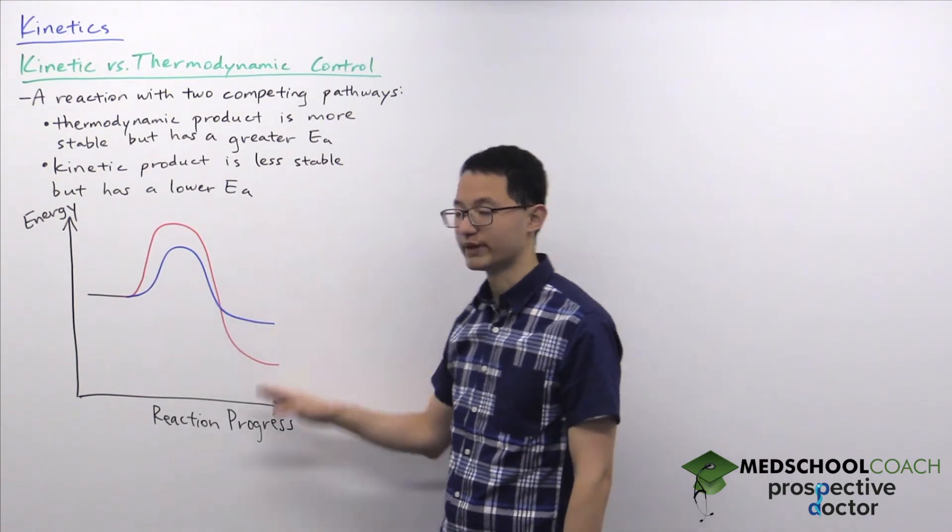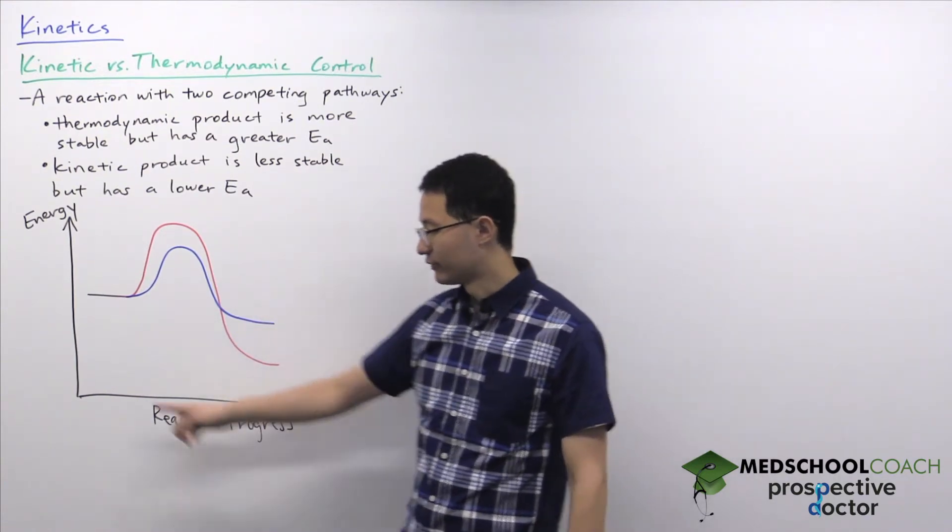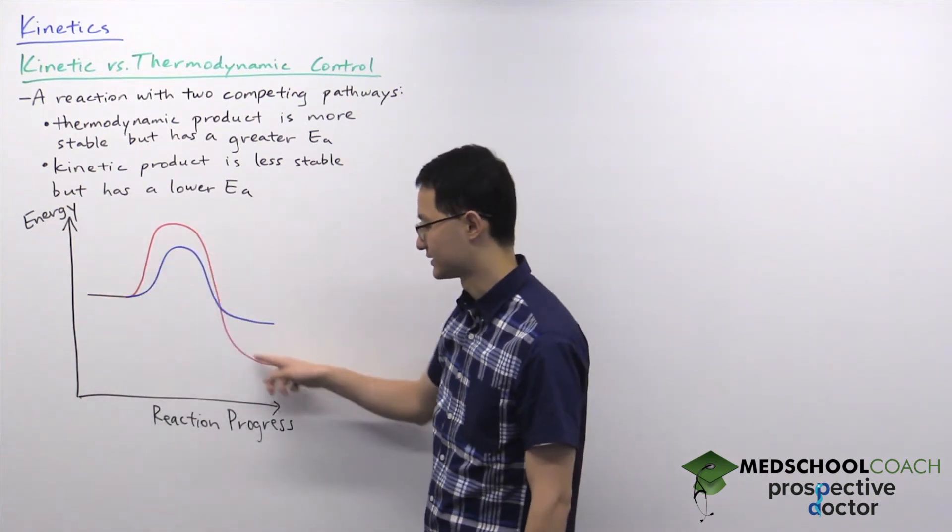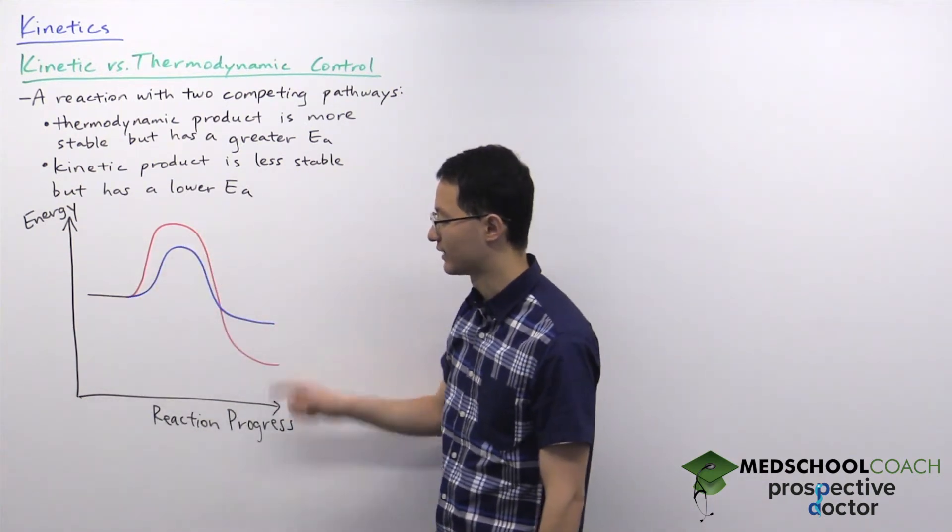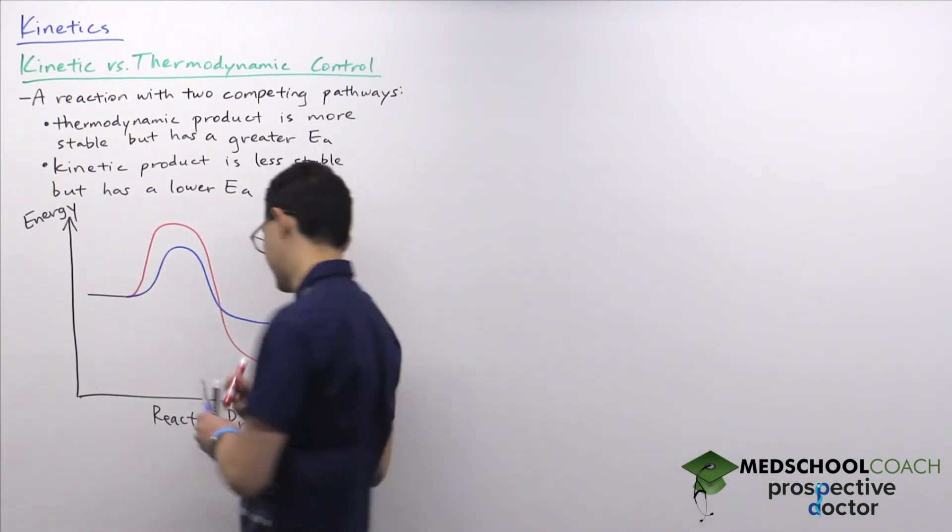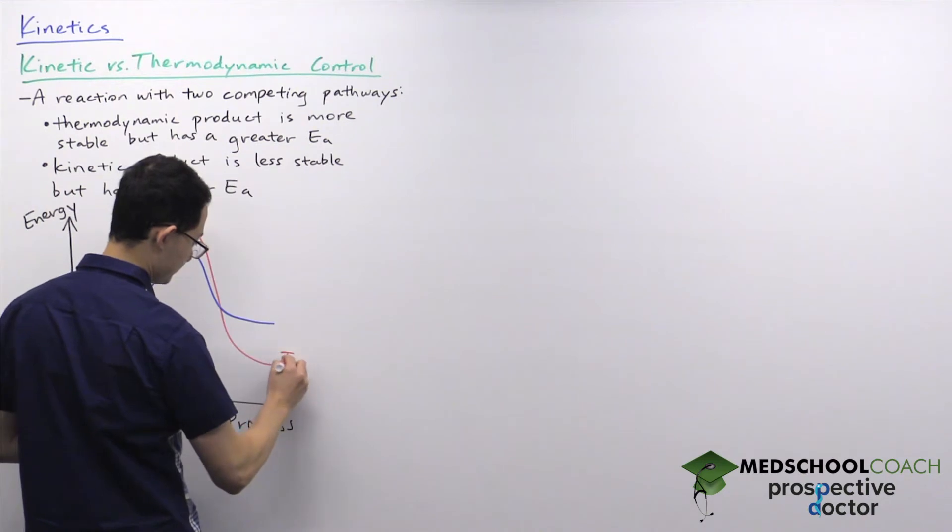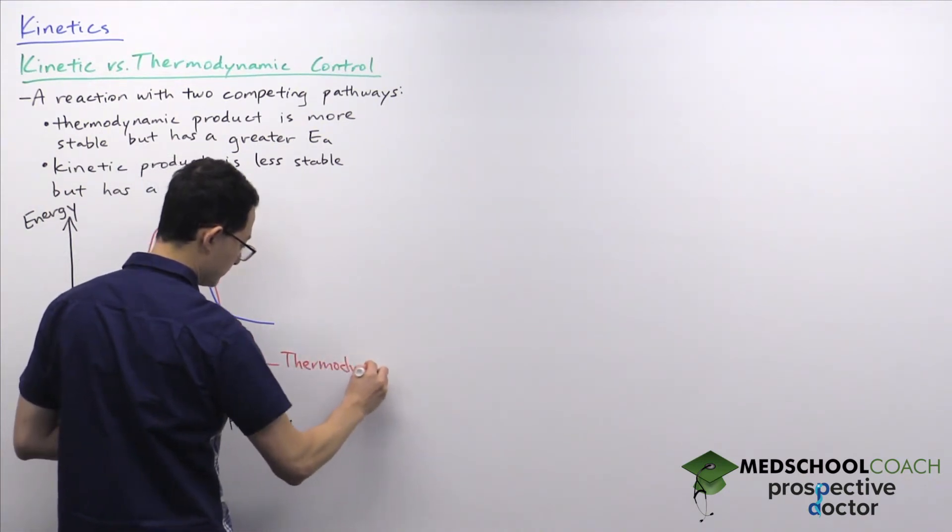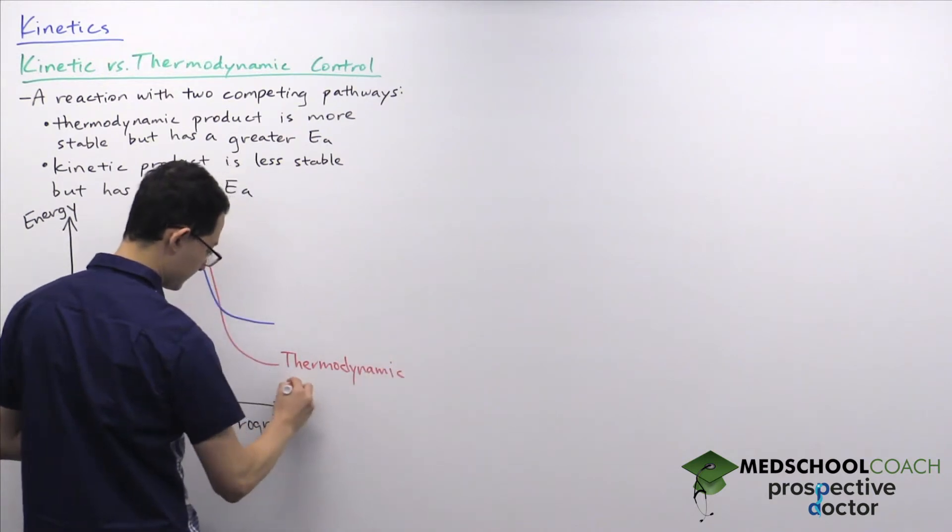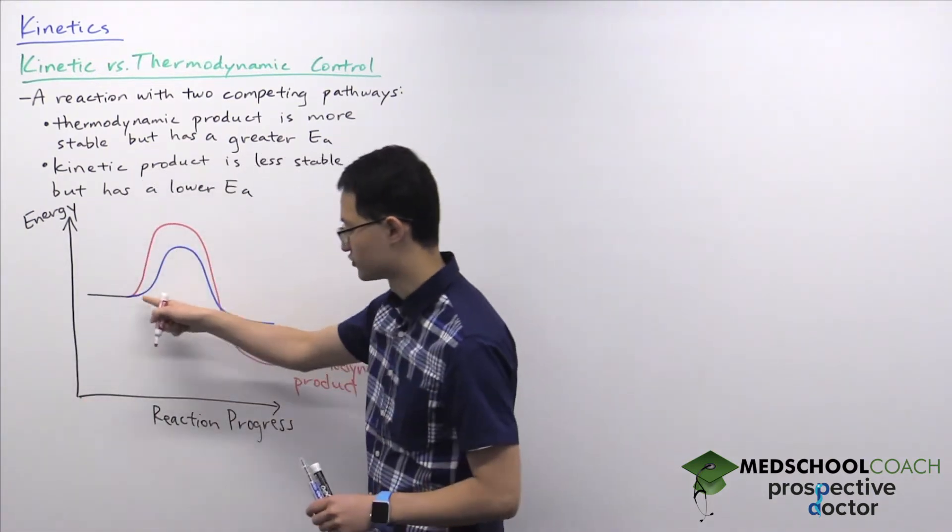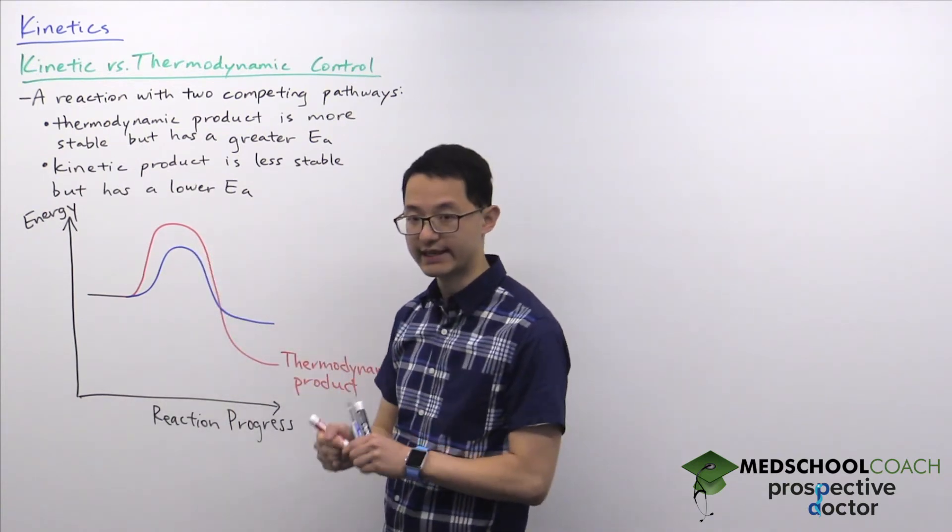We can see how this works in this reaction coordinate diagram. We have reactants and the reactants can go through two paths: this red path and this blue path. The red path results in the formation of the thermodynamic product. The blue path results in the formation of the kinetic product.